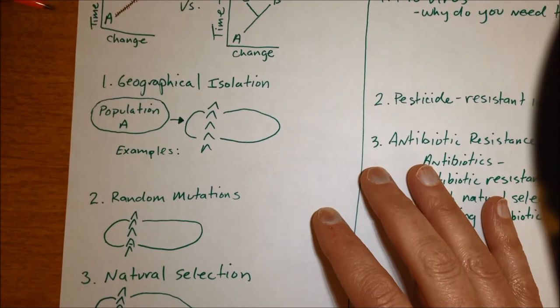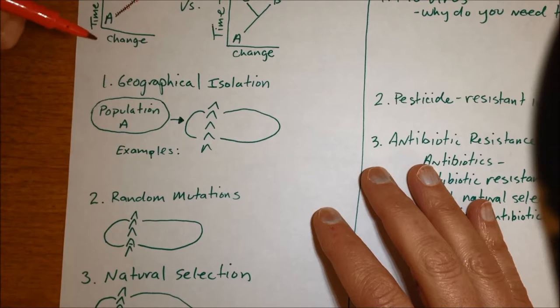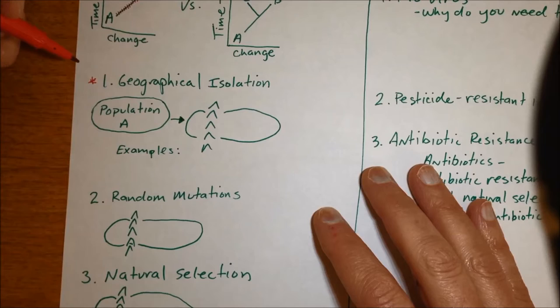So the big idea of how you get speciation which is actually the change of one species into two is there has to be some sort of geographical isolation that happens to a population.